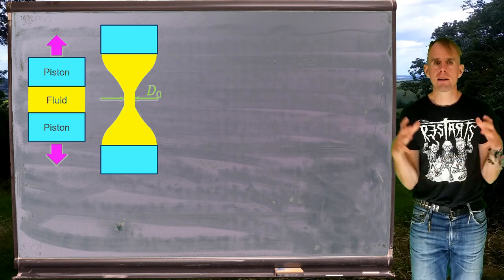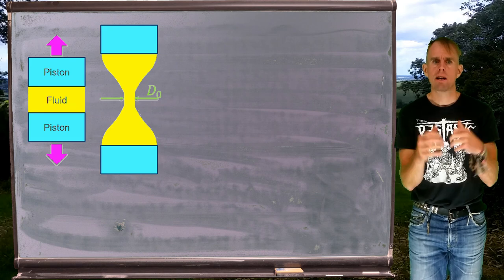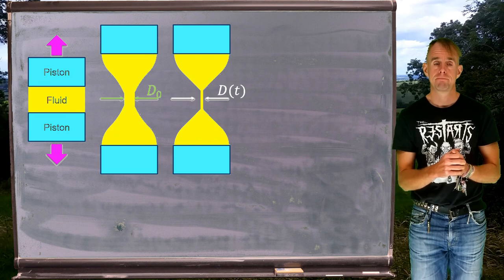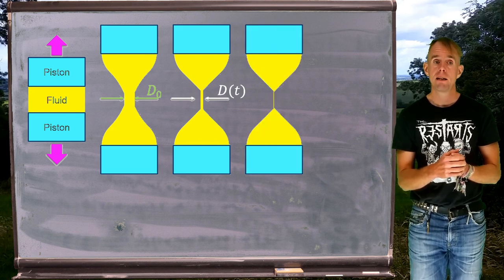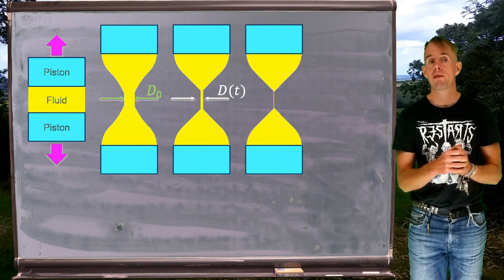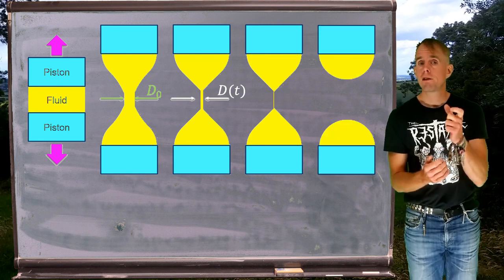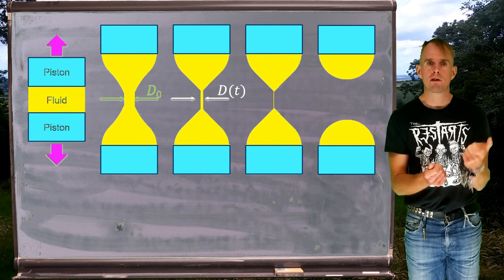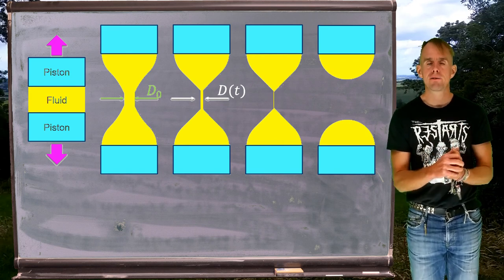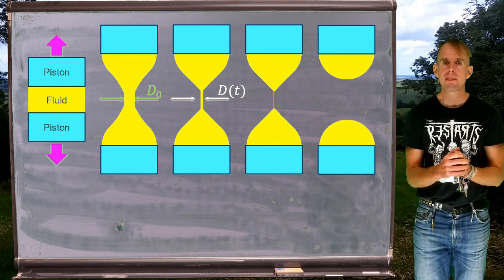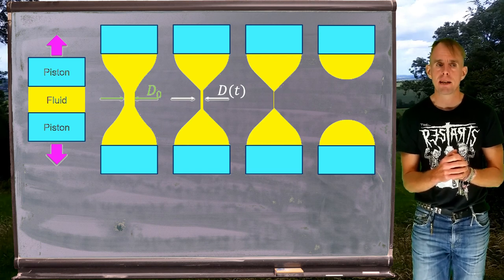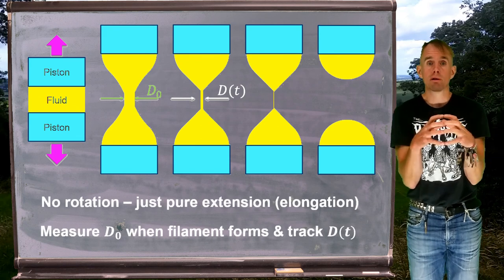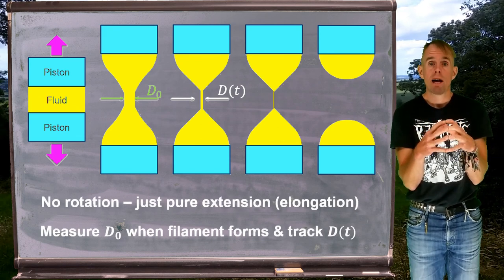Now, over time and under the action of surface tension, that fluid filament will decay and shrink in diameter. Ultimately, the fluid filament will become so thin that it breaks. The experimental measurement that we take is the normalized diameter, d of t over d0 as a function of time. And this diameter thinning is related to what is resisting the stress imposed on the fluid by the surface tension.